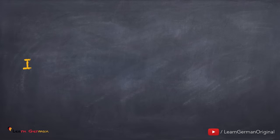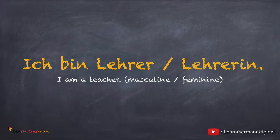Similarly, if you are talking about your profession, you would say Ich bin Lehrer, which is the masculine form, or Ich bin Lehrerin, which is the feminine form. Once again: Ich bin Lehrer. Ich bin Lehrerin. You can check out our video on professions to know various professions in German. The link to this video can also be found below in the description.